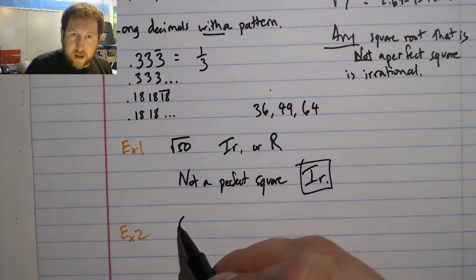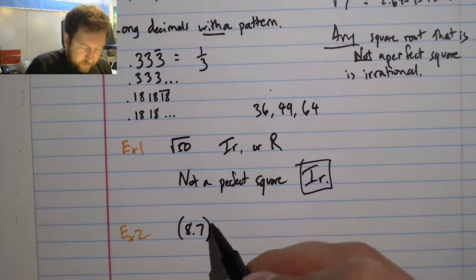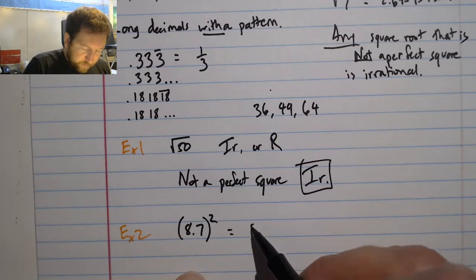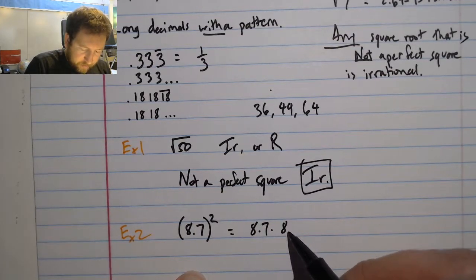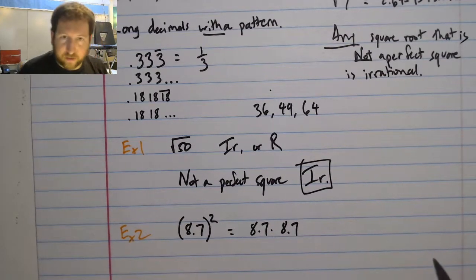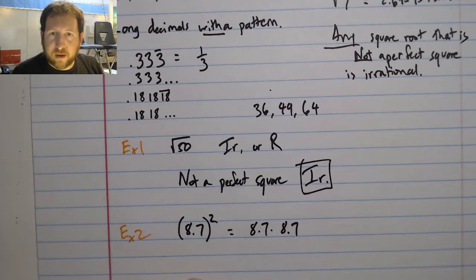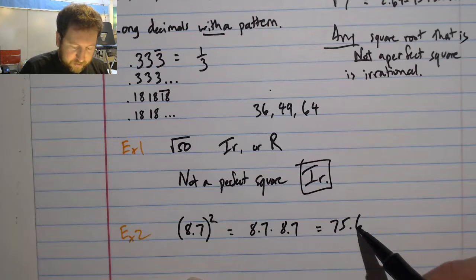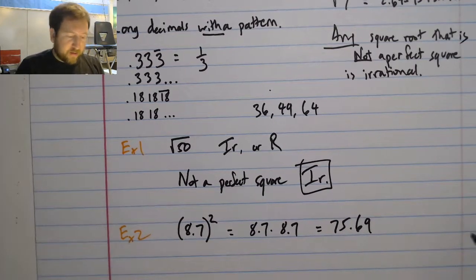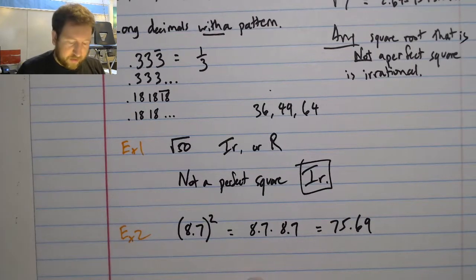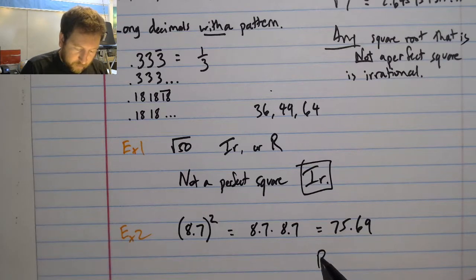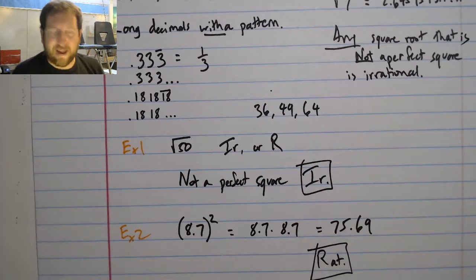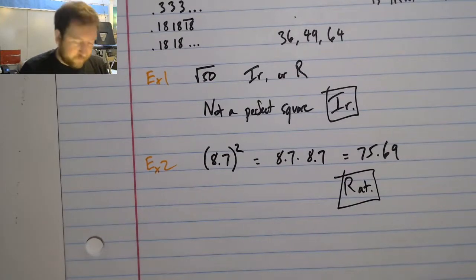Let's take a look at 8.7². Well, this means 8.7 times 8.7. That's kind of confusing looking. Our answer here is, if I put this into my calculator, I can see that it is 75.69. Well, it is not a repeating decimal, so it is definitely rational.